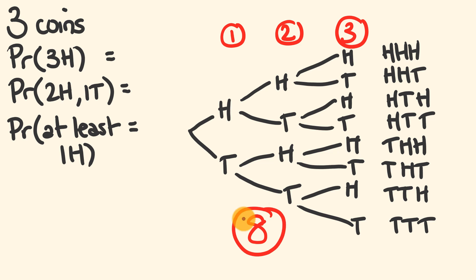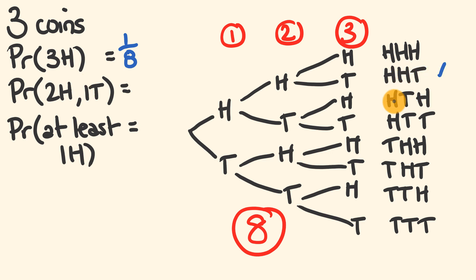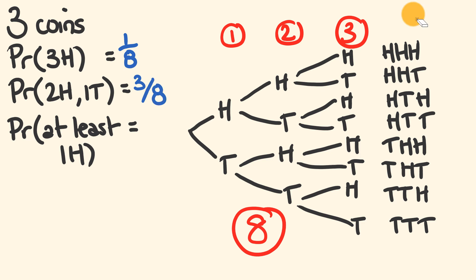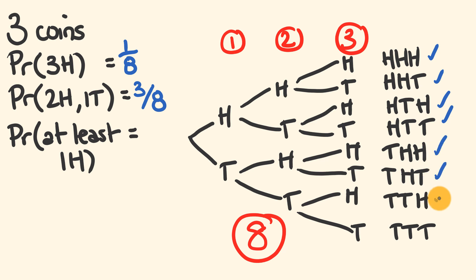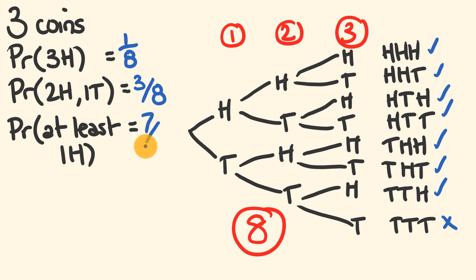So what's the probability of throwing three heads? Only one of those is a favorable outcome, so it is one out of eight. The probability of throwing two heads and one tail: heads-heads-tails is one, heads-tails-heads is another, and tails-heads-heads is another — so altogether a three in eight chance. Finally, the probability of getting at least one head: seven of the eight outcomes contain at least one head, with only tails-tails-tails having no heads. So there's a seven out of eight probability of that occurring.